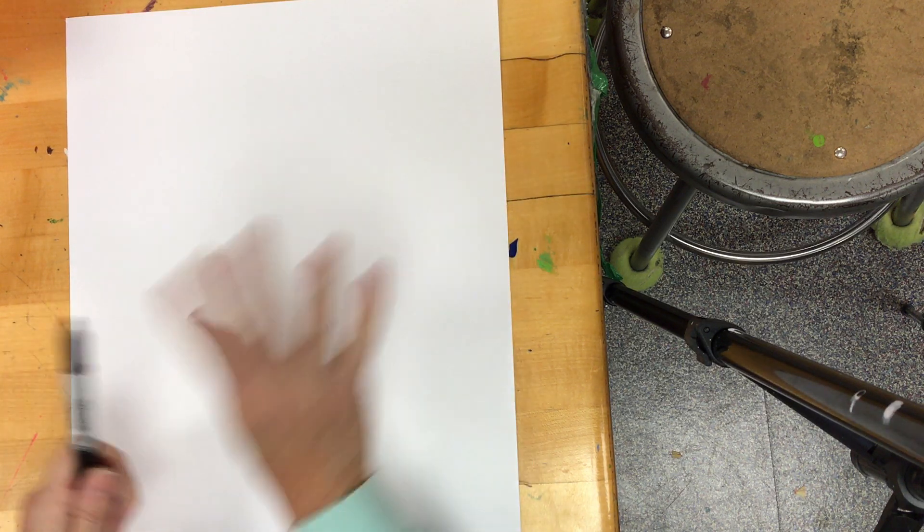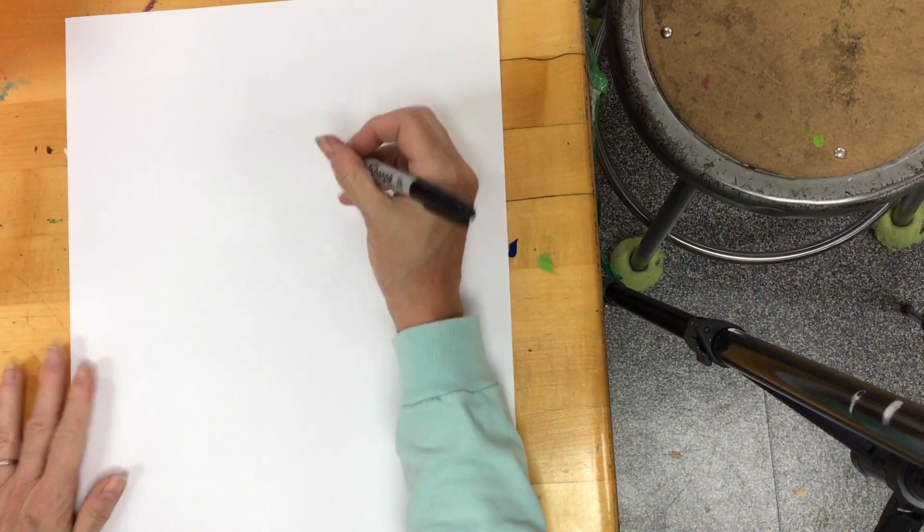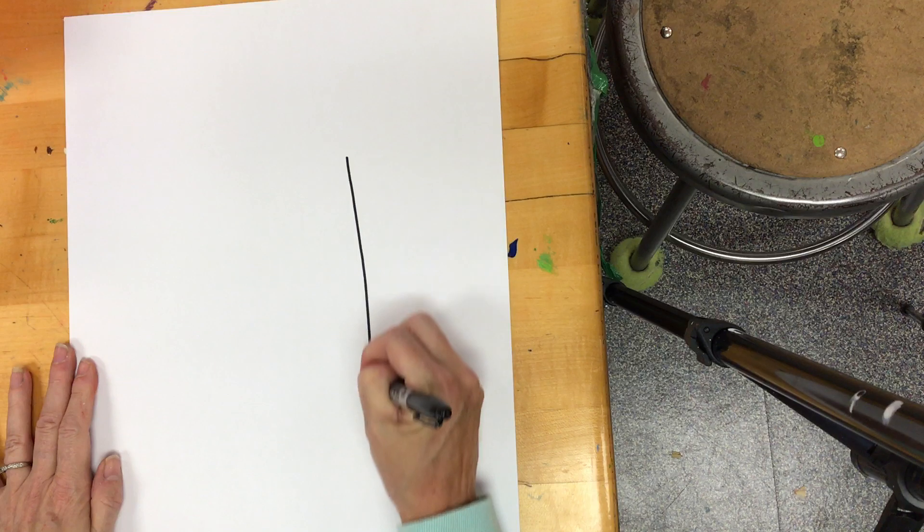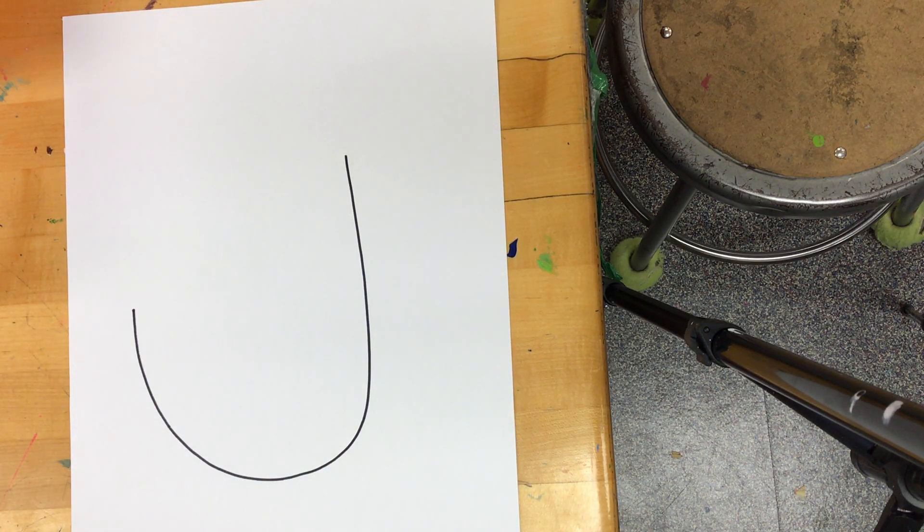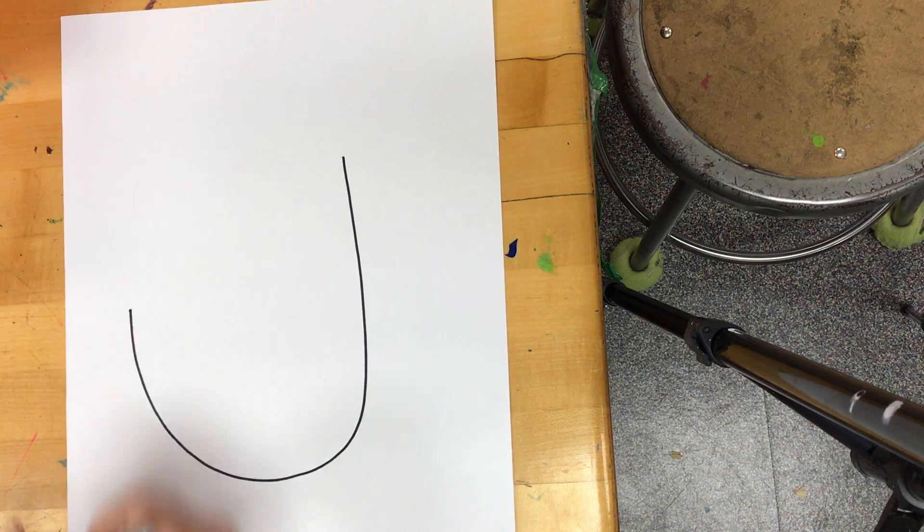I'm going to start by about a hand's length in. I'm going to draw the letter J. Now, I'm using a Sharpie so that you guys can see, but I want you to do it in pencil, and then you can trace it over in a Sharpie. So, I made the letter J.